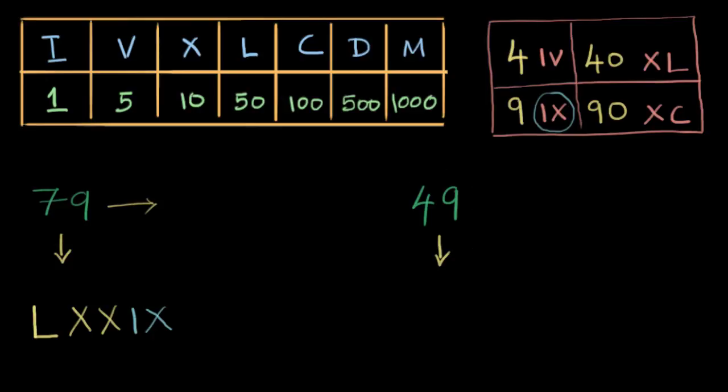This 49 is very interesting. I mean, I was tempted when I saw 49. My temptation was to write IL. Like, why not? 1 less than 50. It turns out that we do not do this. Like we said, we only use subtractive notation for these numbers: 4, 9, 40, 90, or 400, 900.